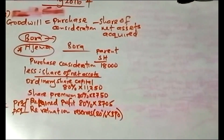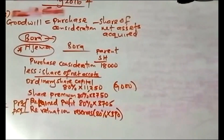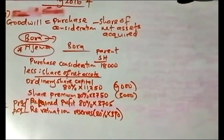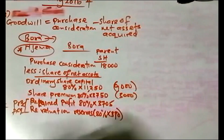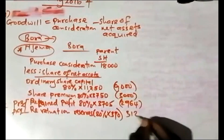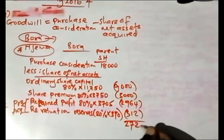Calculating: 80% of 11,250 = 9,000. 80% of 3,750 = 3,000. 80% of 3,705 = 2,964. 80% of 390 = 312. So goodwill = 18,000 minus 9,000 minus 3,000 minus 2,964 minus 312 = 2,724.